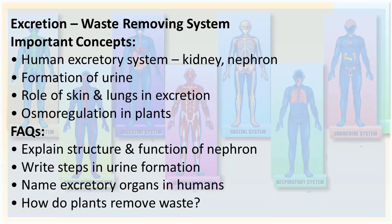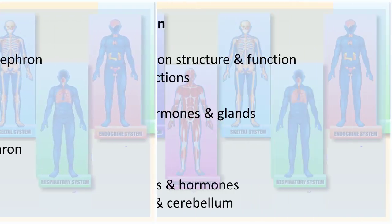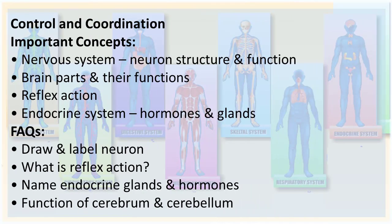Further excretion concepts include formation of urine, role of skin and lungs in excretion, and osmoregulation in plants. FAQs are: explain the structure and function of the nephron, write steps in urine formation, name excretory organs in humans, and how do plants remove waste.